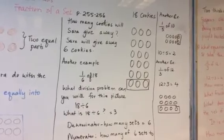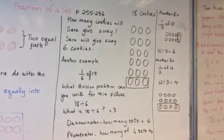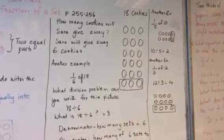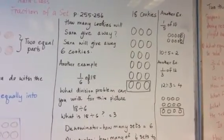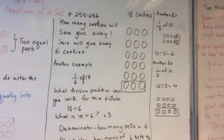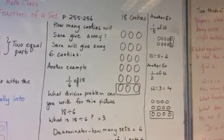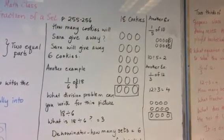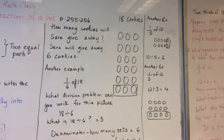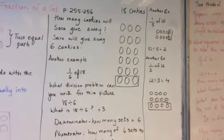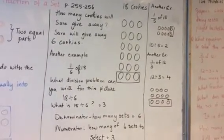So half of 12 is 6. Now we have another example on the whiteboard. If you see 1 sixth of 18, what division problem can you write for this picture? 18 divided by 6 equal to 3.